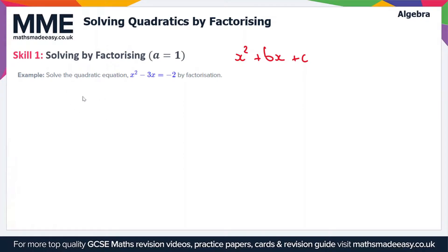Let's have a look at this example. We have to solve the quadratic equation x squared minus 3x equals minus 2 by factorisation.